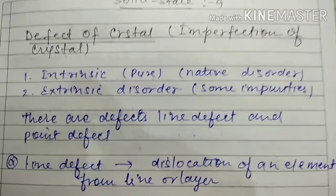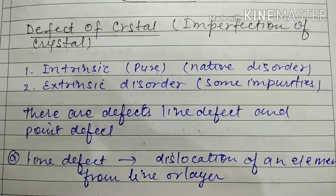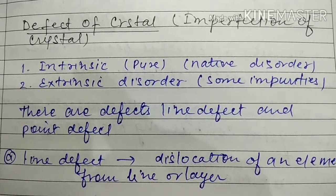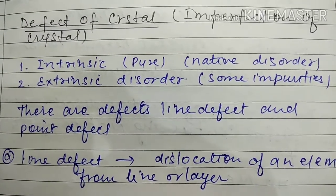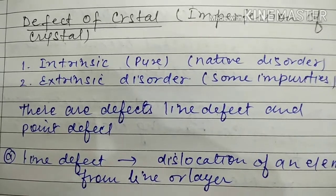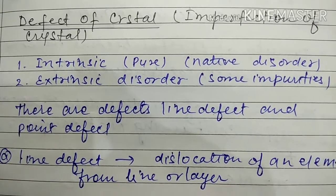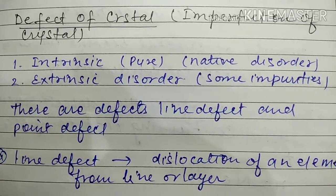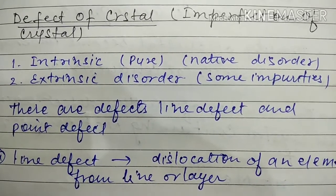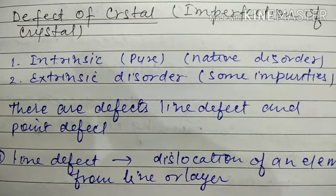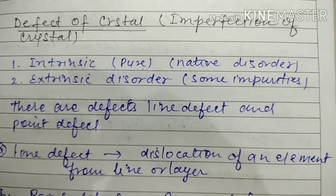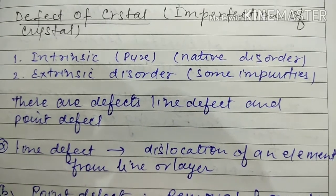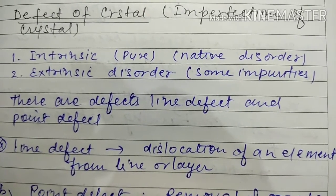Welcome friends, this is the next part of solid state — defects of crystals, also called imperfections of crystal. There are two types: intrinsic (pure/native) disorders and extrinsic disorders, which are caused by impurities. There are also two categories of defects: line defects and point defects.